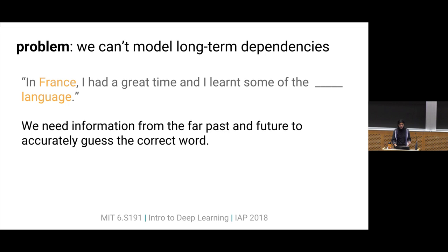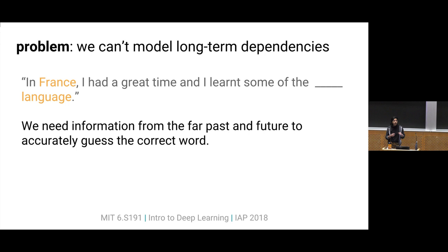Consider the sentence: "In France, I had a great time and I learned some of the blank language," where we're trying to predict the word in the blank. I knew it was French because I looked very far back at the word France that appeared at the beginning of the sentence. If we were only looking at the past two, three, or even five words, it would be really hard to guess the word in that blank. So we don't want to limit ourselves. We want to ideally use all of the information in the sequence, but we also need a fixed-length vector.